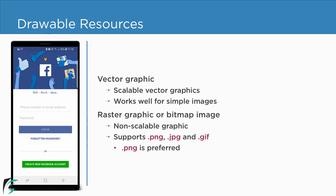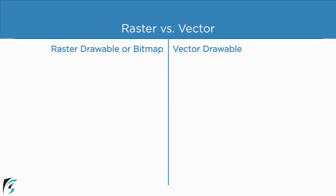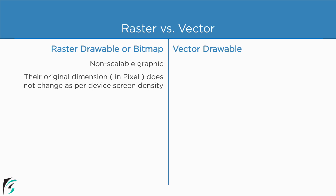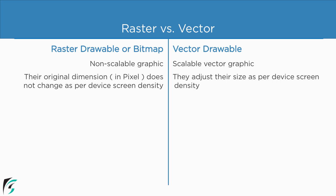We will explore more about vector graphics and raster graphics in our upcoming clips. Before we check out how to implement the vector drawable in our application, let us first look at the differences between raster drawable and vector drawable. Raster drawables are non-scalable — their original dimensions remain the same across different screen density devices. But vector drawables adjust their size as per the device screen density. So raster drawables might get pixelated, but vector drawables never get pixelated.